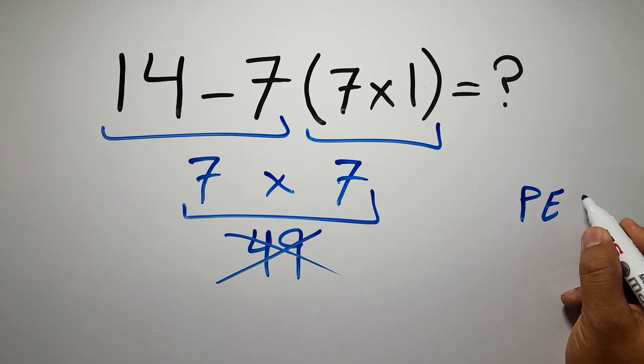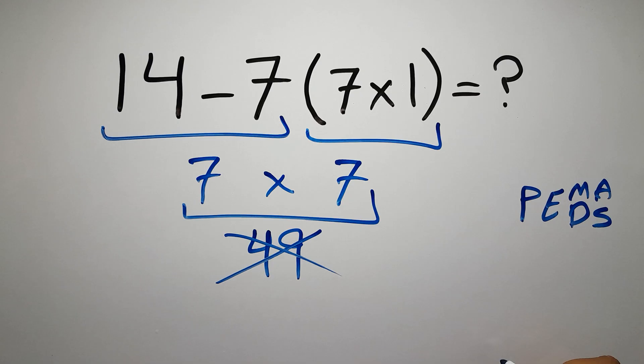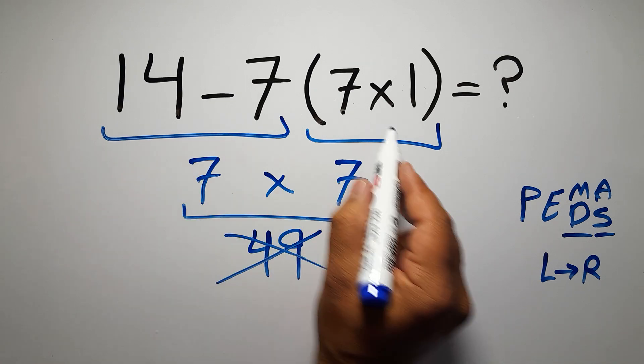Remember that multiplication and division have equal priority and we have to work from left to right. The same applies to addition and subtraction. In this expression we have one subtraction, one multiplication, and one parentheses. Inside this parentheses we have one multiplication.